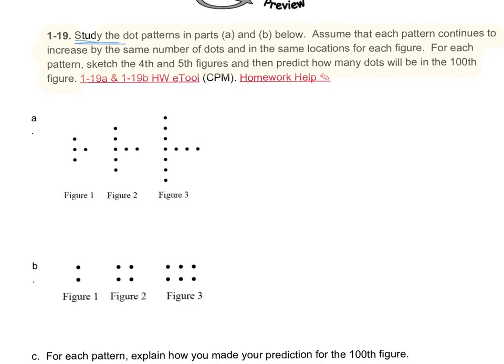So to study the dot patterns, what you want to do is identify what changes and what stays the same. For example, in figure one, I see that I have the same shape in figure two, but I also have an additional three dots on each side. And if I'm counting, figure one has four and figure two has those same four, but I'm adding an additional one on each side, so three.